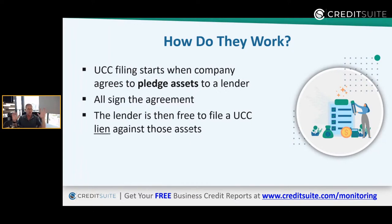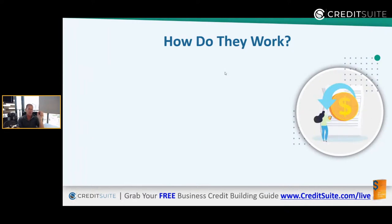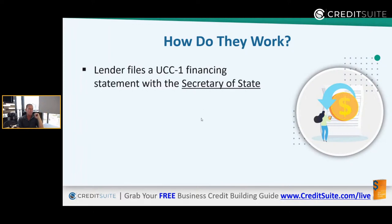Once you've agreed to a secured debt — say an SBA loan collateralized by commercial real estate — the lender can then file a lien against that asset. It's important to know that some lenders don't do this. So I always recommend asking upfront: do you file UCCs? A lot of times they don't; a lot of times they do. If they do, lenders file what's called a UCC-1 financing statement with the secretary of state that your business is in, and that creates a lien against the actual debt.